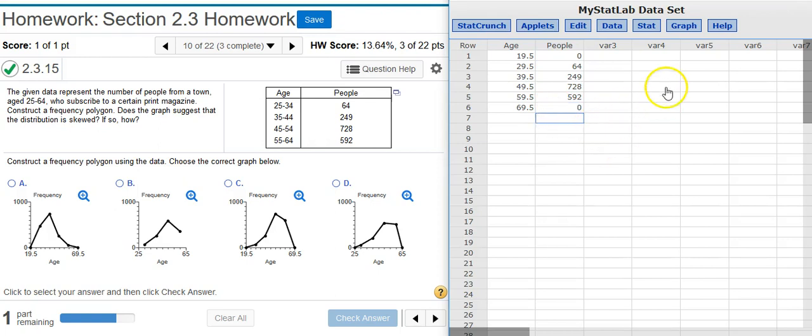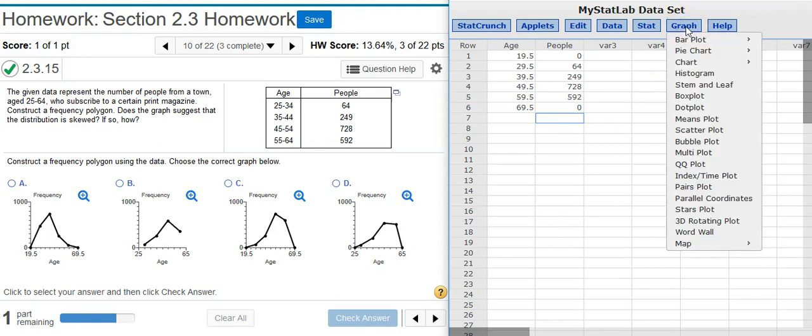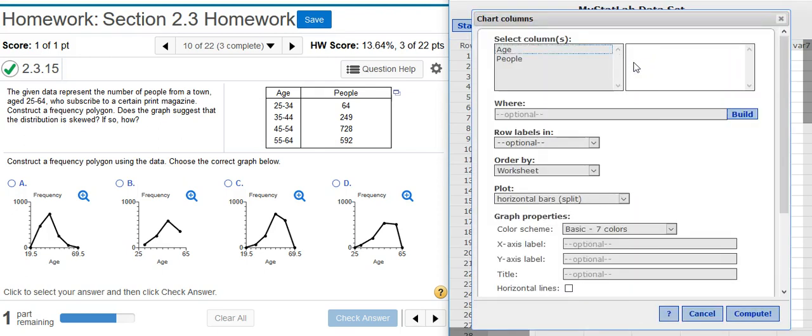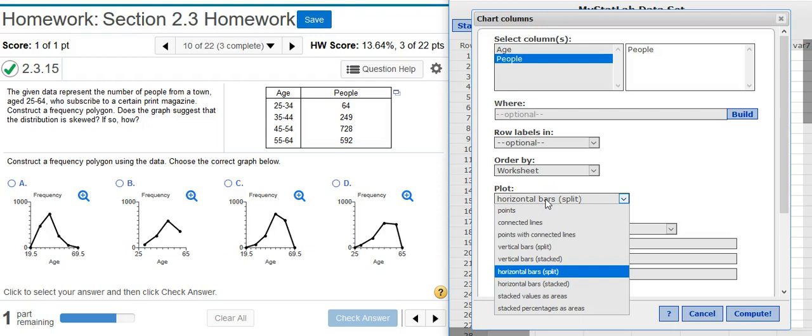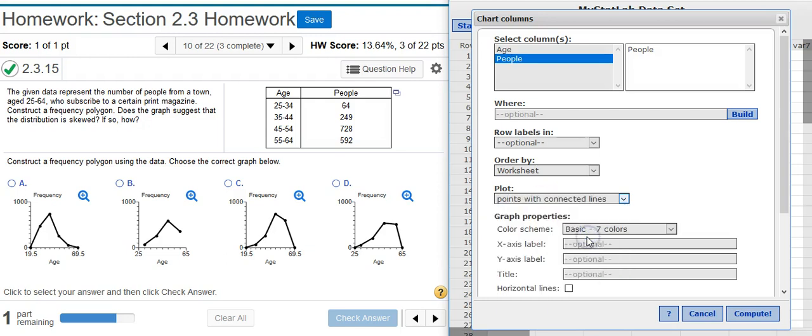Okay, now I'm ready to actually make my frequency polygon. To do that, I go to Graph, and for this I want to go Chart Columns. Here in the options window, I want to select People because this is where the actual frequency counts are located. And then down here, under Plot, I want to select Points with Connected Lines. All the other default options are good for our purpose, so we'll just hit Compute.